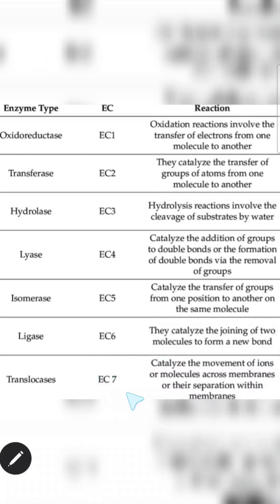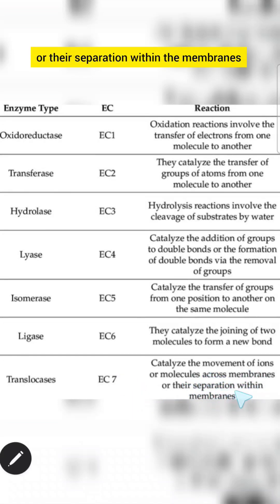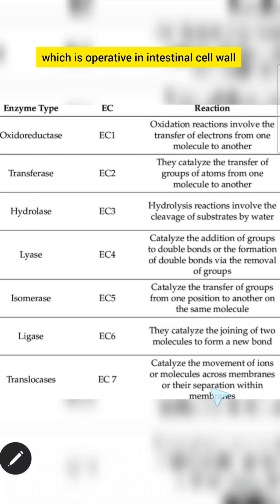The seventh class is translocase, which catalyzes the movement of ions or molecules across membranes or their separation within membranes. An example of the translocase class is the sodium-potassium pump, which operates in intestinal cell walls and kidney tubules.